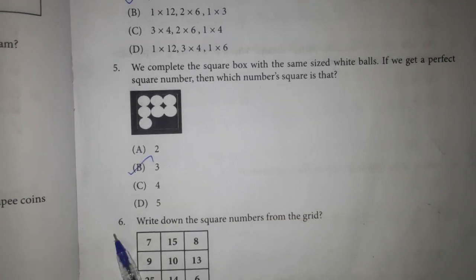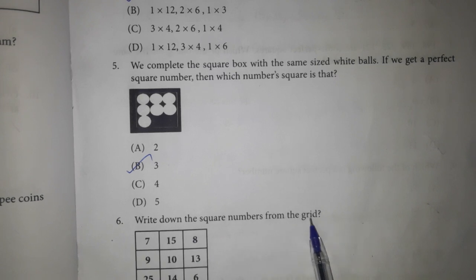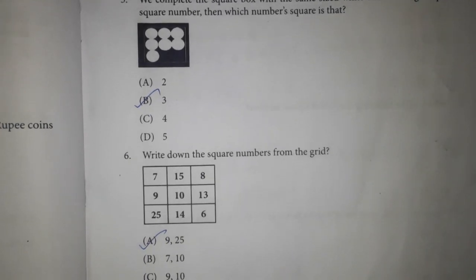Answer option B. 6th one. Write down the square numbers from the grid. 9 and 25 square numbers.